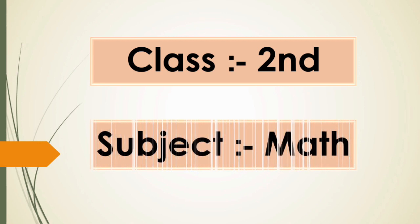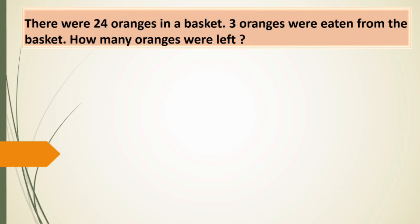A glad welcome to all of you there. We will do question number 5 and 6 from page 60 of your book. There were 24 oranges in a basket. 3 oranges were eaten from the basket. How many oranges were left?